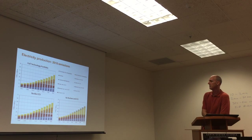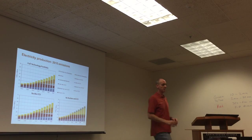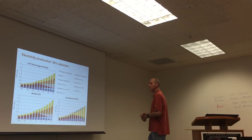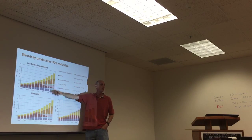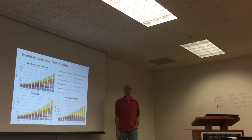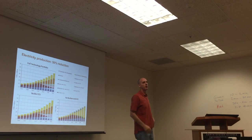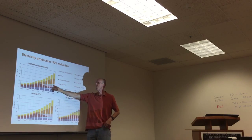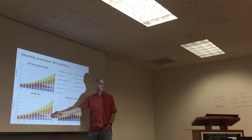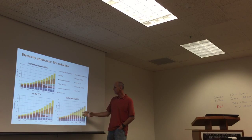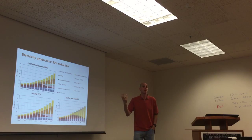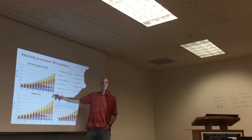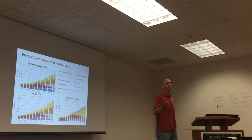In the electricity sector, for the 50% reduction scenarios with all technologies, electricity production actually increases compared to the reference — you're using electricity more for cars and heat pumps. If you have bio-CCS, electricity becomes a net sink; without bio-CCS, every bit of coal has CCS on it. Without CCS or nuclear at all, it's all wind and other renewables. This is the character of what a two-degree scenario looks like — that's a core purpose of this style of analysis.